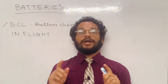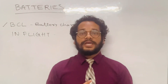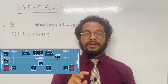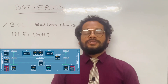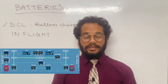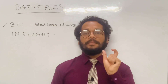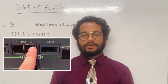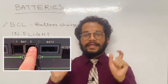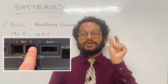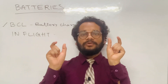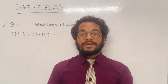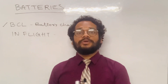On the overhead panel of the Airbus A320, there is an electrical panel with two push buttons — BAT 1 and BAT 2 — and two display units, one for Battery 1 and one for Battery 2, indicating their respective voltages.